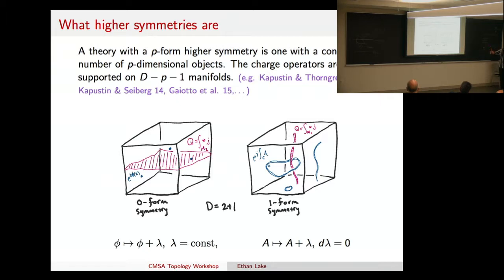So this is a global symmetry, not a gauge symmetry, because you can shift something by a flat connection. And then, yeah, so two-form symmetries have surfaces, three-form symmetries, volumes, etc.